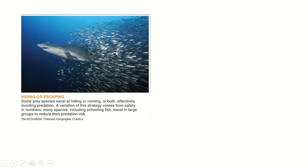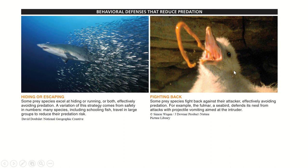Other defenses include running away and hiding — fish in a school make it harder for a predator to single out an individual, and the fish can signal each other to flee. Some organisms fight back, sometimes physically and sometimes by doing gross things that make the predator back off — for example, some birds vomit on an intruder, which can just make a predator decide 'no, I don't want to eat that' and go away. There are lots of different forms of defense against predation shaped by this continuing evolutionary battle between predators and prey.